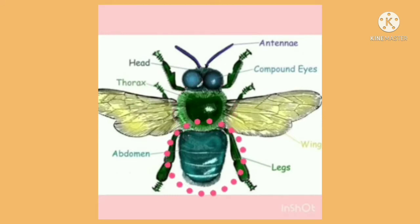And the last one is the abdomen. The abdomen is the largest part of the insect's body and it contains the stomach and the reproductive system, just like humans do.